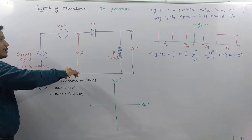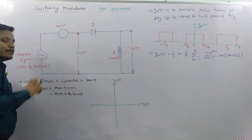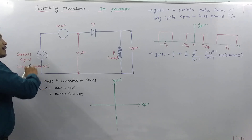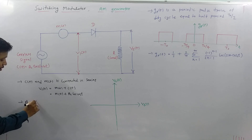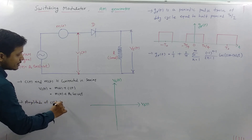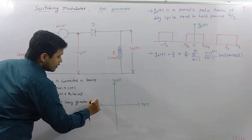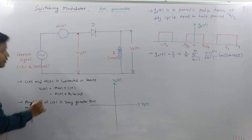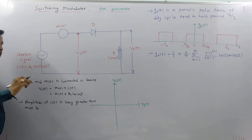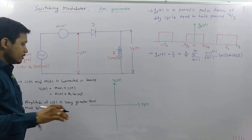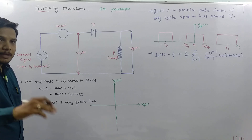Now V1T is passing through the diode. One important thing to understand: the amplitude of the carrier signal CT is far greater than the magnitude of the modulating signal MT. Because of this, the diode on and off operation is justified by the carrier signal. I will show you how it is turning the diode on and off.